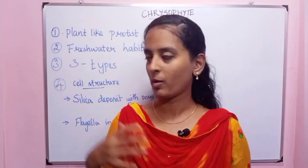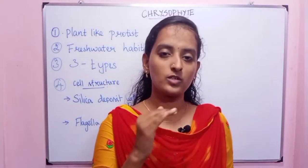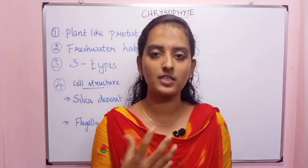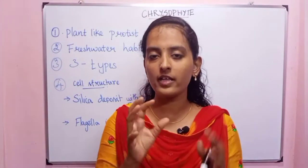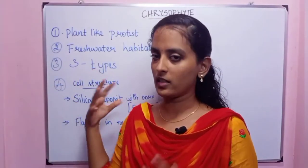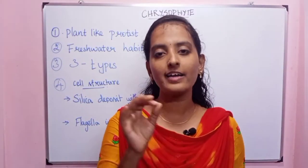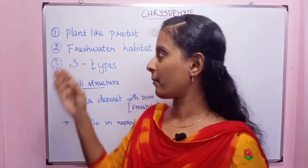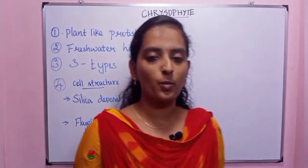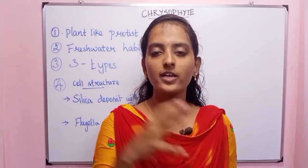First, we will talk about chrysophytes. Chrysophytes means plants. Plant-like protistopathy is the chrysophytes. So plant-like protist is the first character of chrysophytes.